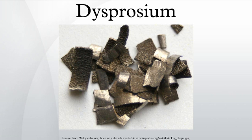Dysprosium is used in dosimeters for measuring ionizing radiation. Crystals of calcium sulfate or calcium fluoride are doped with dysprosium. When these crystals are exposed to radiation, the dysprosium atoms become excited and luminescent. The luminescence can be measured to determine the degree of exposure to which the dosimeter has been subjected. Nanofibers of dysprosium compounds have high strength and a large surface area and can be used to reinforce other materials and act as a catalyst. Fibers of dysprosium oxide fluoride can be produced by heating an aqueous solution of DyBr3 and NH4F to 450°C at 450 bar for 17 hours. This material survives over 100 hours in various aqueous solutions at temperatures exceeding 400°C without re-dissolving or aggregating.